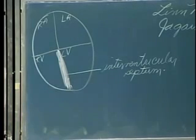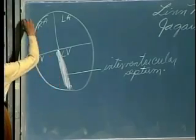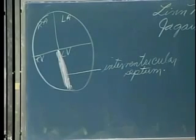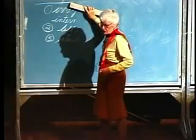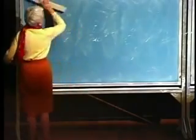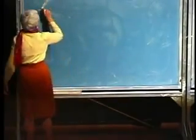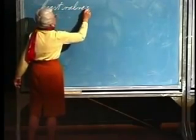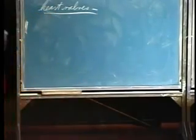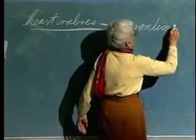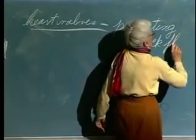We'll find that the left ventricle has much thicker muscle than the right. Why is that? It's got to pump all the way around the body. The right only has to pump to the lungs. We'll show pictures and you'll see how dramatically thicker it is.